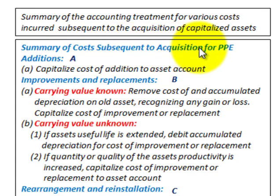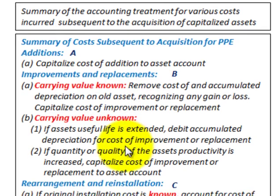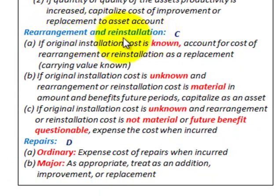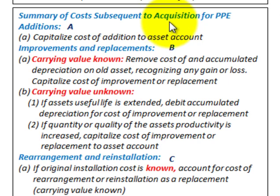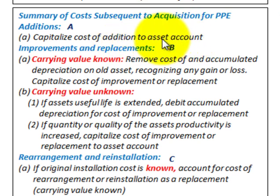Summary of costs subsequent to the acquisition of property, plant and equipment. We're going to be considering four categories: additions, improvements and replacements, rearrangements and reinstallation, and repairs. For additions — where a new asset is created — you would capitalize the cost of the addition to the asset account.